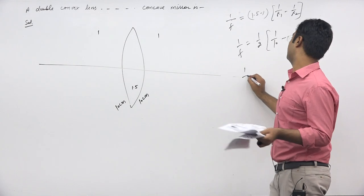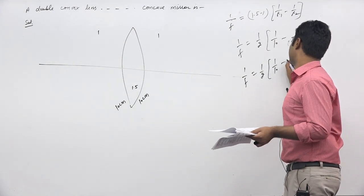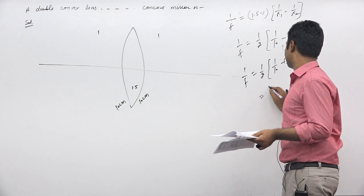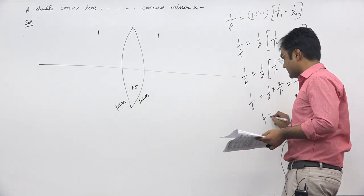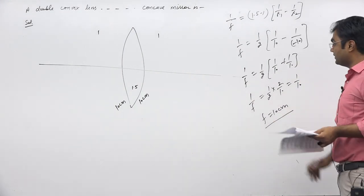So here, 1 upon f is equal to 1 by 2 times 1 by 10 plus 1 by 10, which equals 2 by 10. 1 by 2 into 2 by 10 equals 1 by 10. Therefore, the focal length is 10 centimeters.